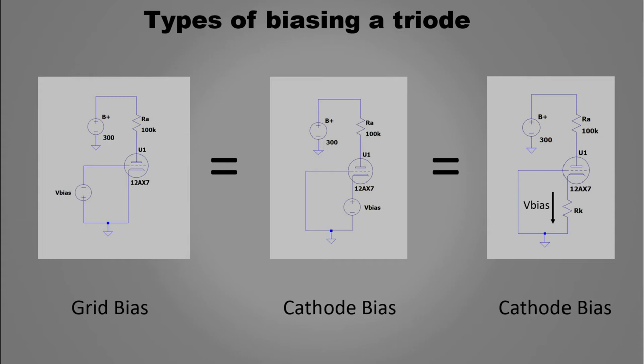And for proper operation of the tube, this voltage must be negative. This is, the cathode voltage always must be greater than the grid voltage.